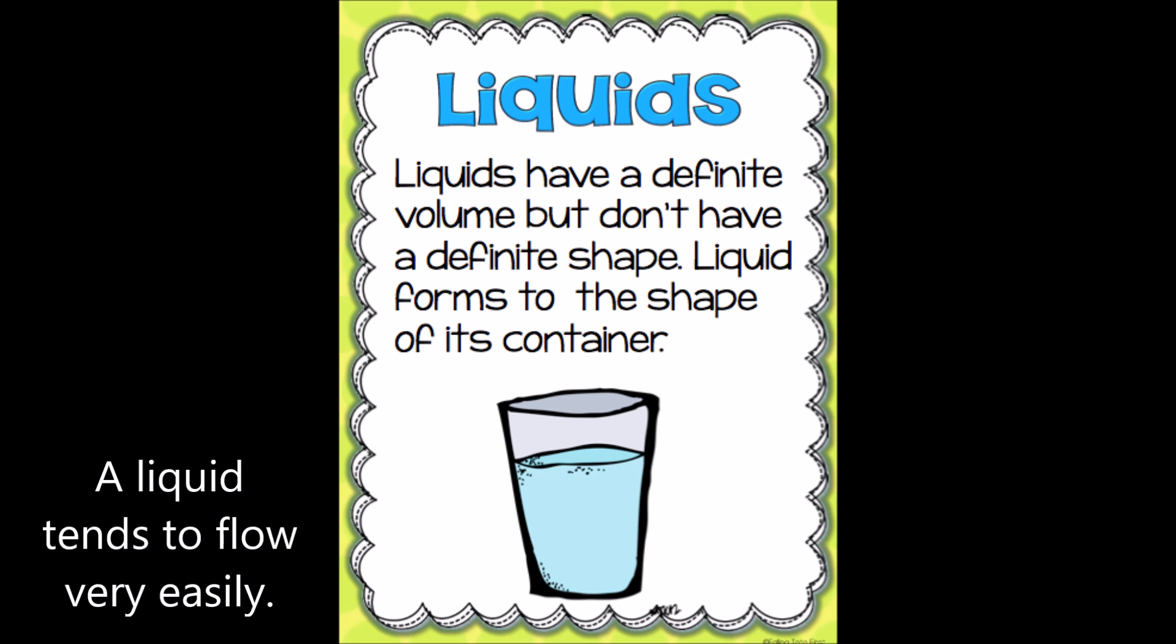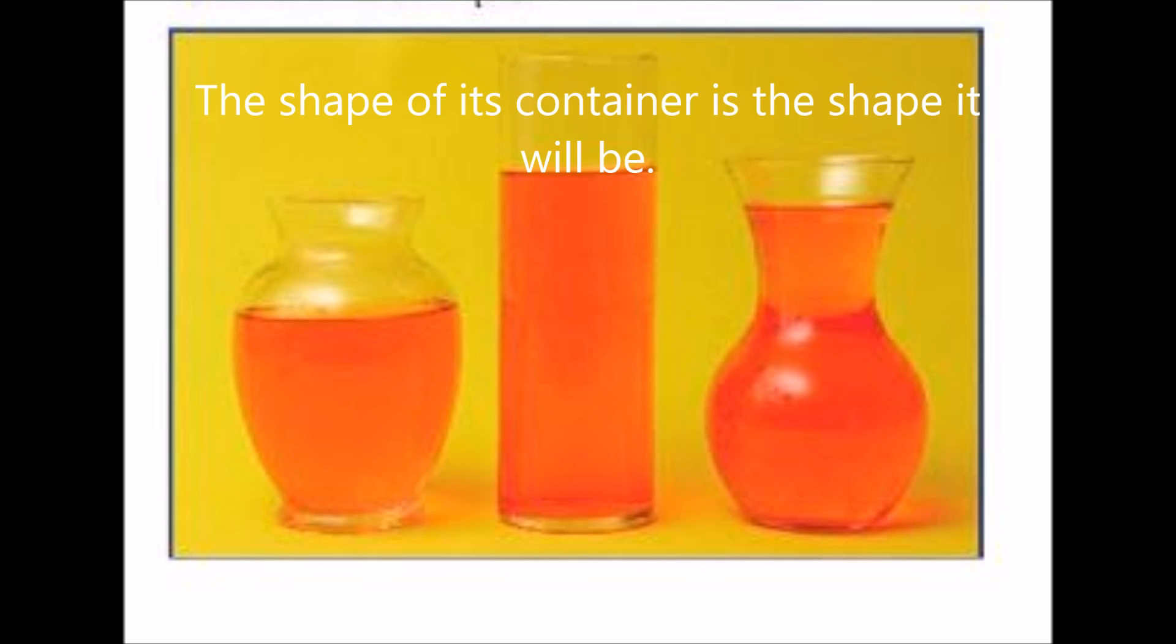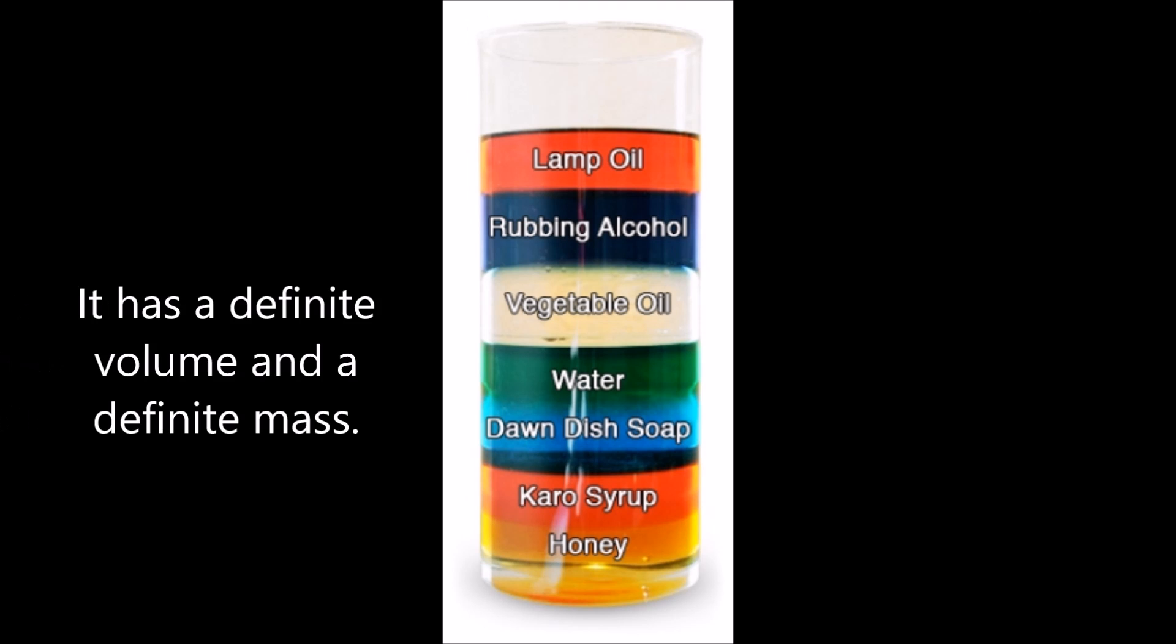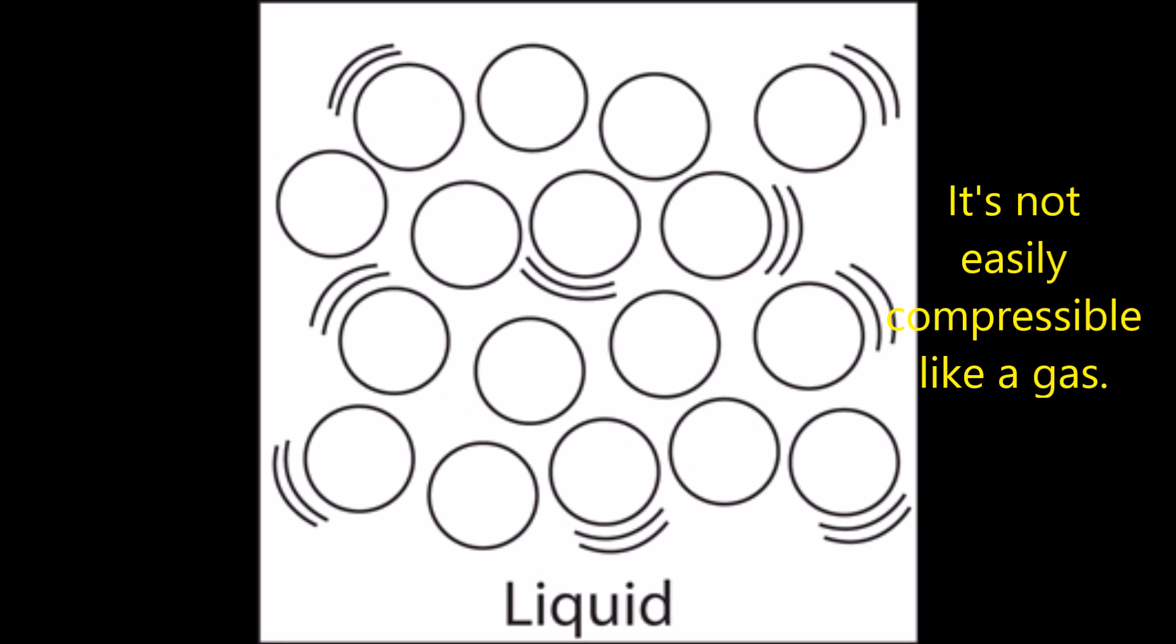A liquid tends to flow very easily. The shape of its container is the shape it will be. It has a definite volume and a definite mass. It's not easily compressible like a gas.